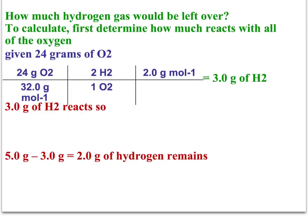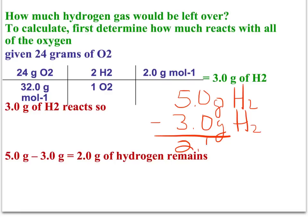Our final step is to take the grams of hydrogen which we started with. So we can say we started, we had 5.0 grams of H2, and this was at the beginning. And subtract the 3.0 grams of H2 that reacted. And that gives 2.0 grams H2 remaining.